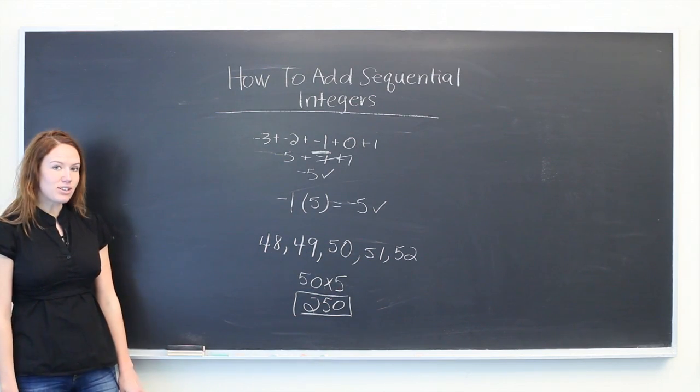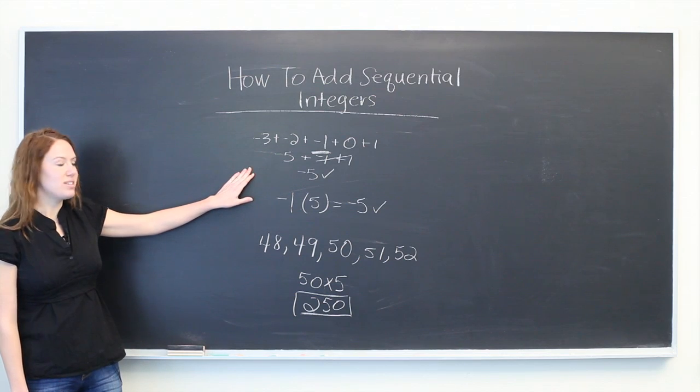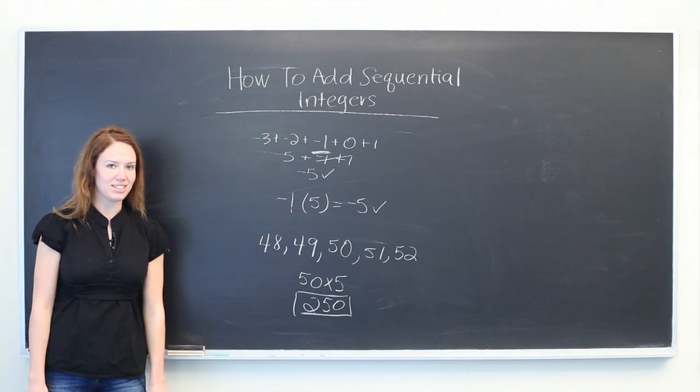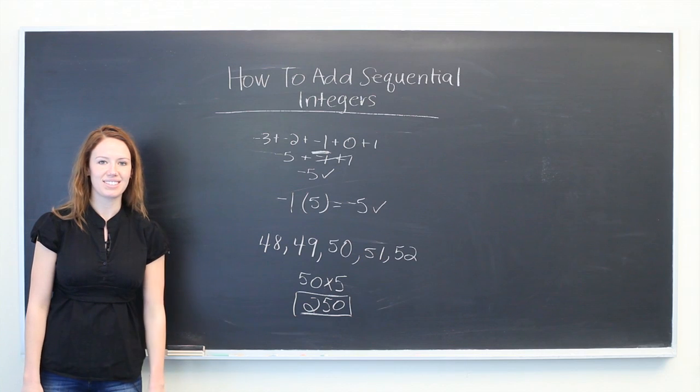So thanks for watching. The way to add sequential integers is to take the median value and multiply it by the number of values in your series. Thank you.